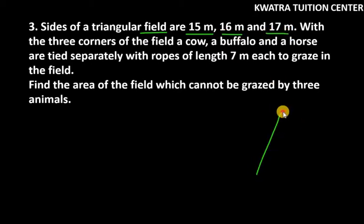So we have a triangular field. One side is 16 meter, other is 15 meter and the third one is 17 meter. Now it says with the three corners of the field, we have a cow, a buffalo and horse that are tied separately with ropes of length 7 meter.